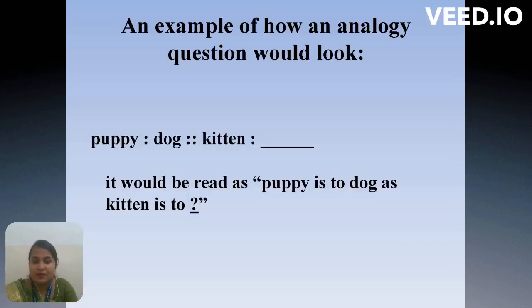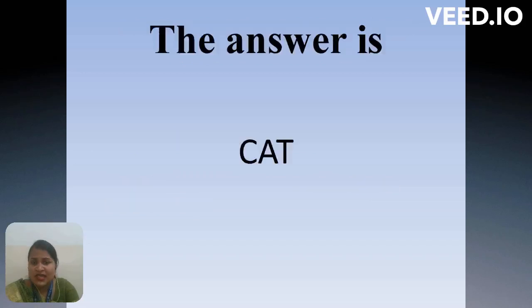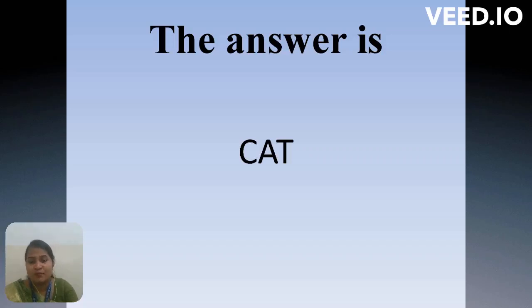Here is another example. Puppy is to dog — obviously. So kitten means what? Think about what relevant word would come. Kitten means cat, obviously. So the answer is cat. This is how analogies work — they are related to each other. These basic word examples help with better understanding.